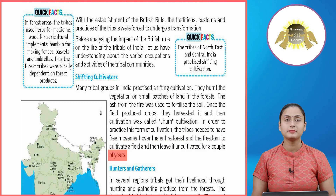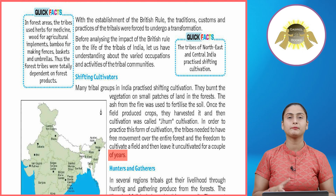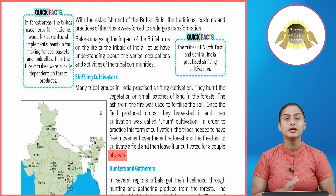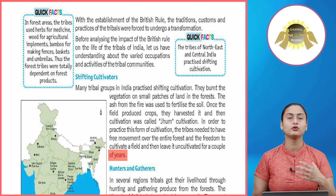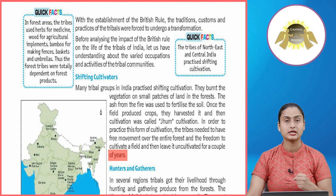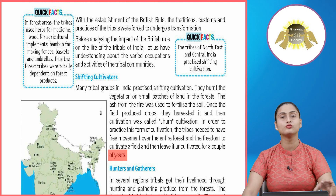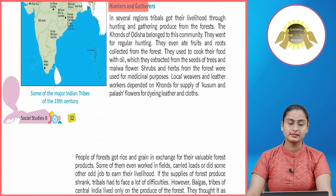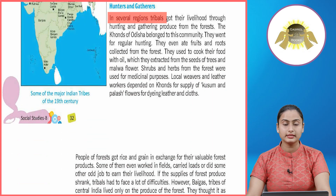In the process of shifting cultivation, a particular area of forest land was burned; the remaining ash would fertilize the soil, after which any crop could be grown on that land. However, to follow shifting cultivation, free movement throughout the entire forest was essential.